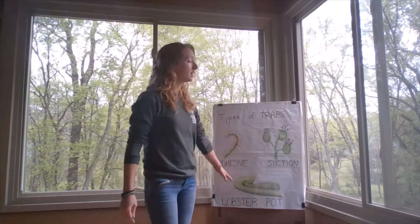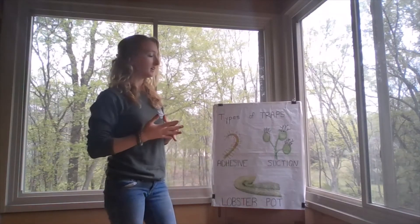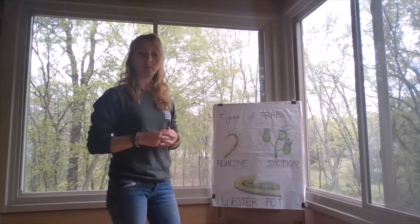A lobster pot trap acts as a maze with an entrance that is easy for prey to find from the outside but as they go further and further inside they get trapped and can't find their way back out.